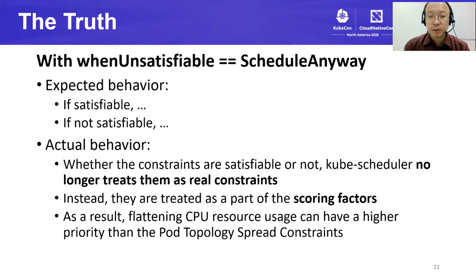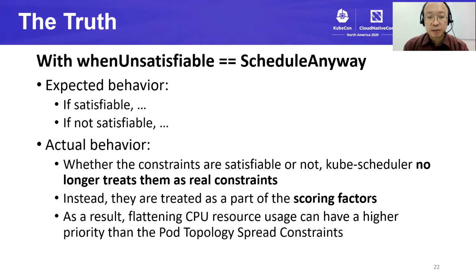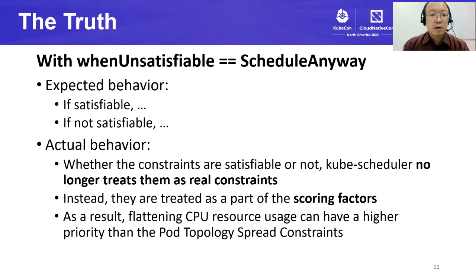Why are the new storage management pods scheduled in such a way? We inspected the source code of kube-scheduler and found the actual behavior. What we expected had two if-clauses: if satisfiable and if not satisfiable. The actual behavior is that whether the constraints are satisfiable or not, kube-scheduler does not treat the constraining conditions as real constraints. Instead, the conditions are treated as part of the scoring factors. As a result, flattening CPU resource usage took a higher priority. Even though the spread constraint was satisfiable, the existing computing pods prevented even distribution. This came from the prioritizing algorithm of kube-scheduler, so we need to tune it.